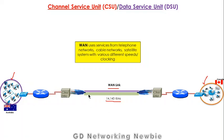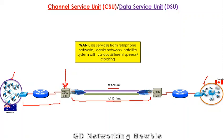From one point to the other, we purchase services from service providers, and these providers can operate at different speeds or different clocking. So we have the local area network on one side and the wide area network providing services on the other. Because they operate at different speeds, we need something to handle the clocking. Also, this wide area network link may have different frame formats on each side, so we need a middleman to act as a translator.